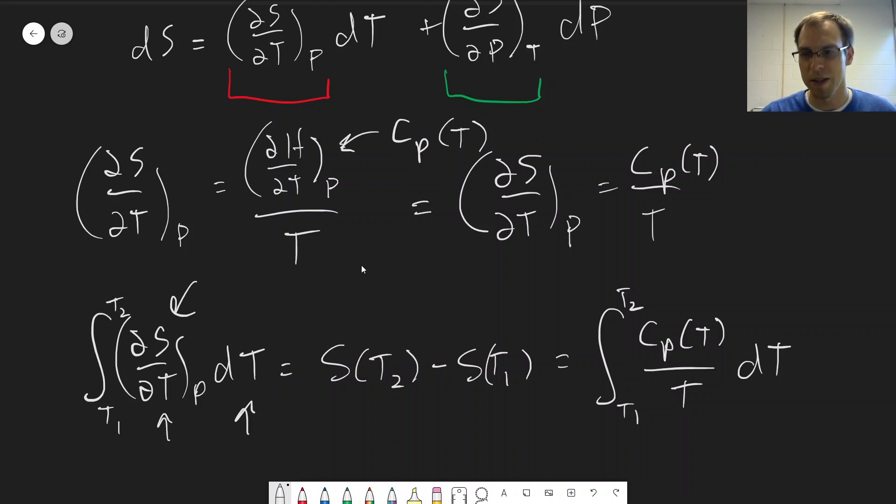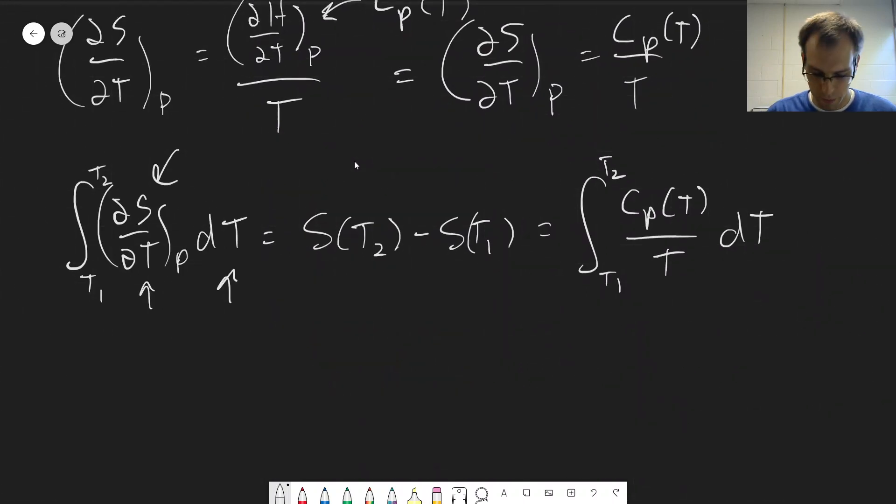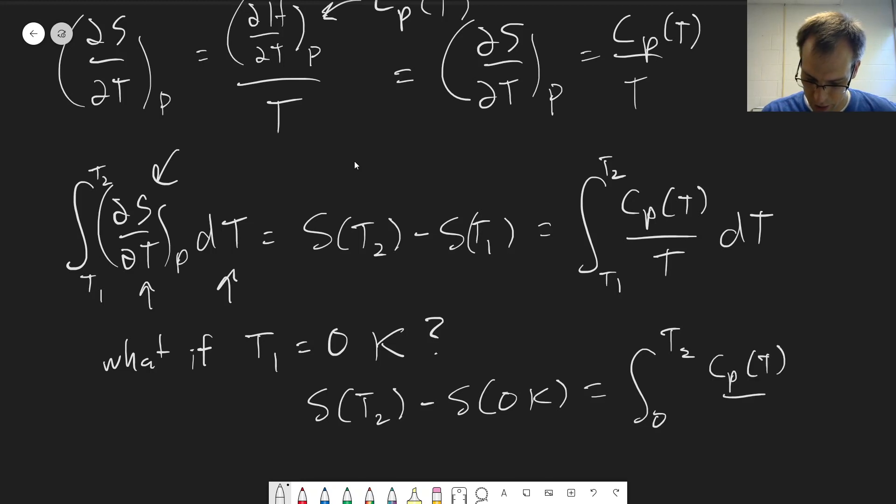Now, let's consider a specific case. What if T1 is equal to 0 Kelvin? In that case, we would get S at T2 minus S at 0 Kelvin. And then we can still do this integral. But the question is, what is this value here? And that's where the third law of thermodynamics is going to come in. And we'll look at that in the next video.